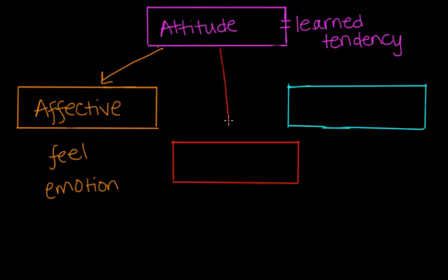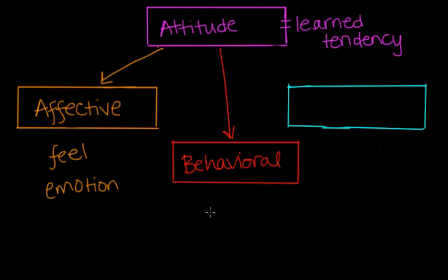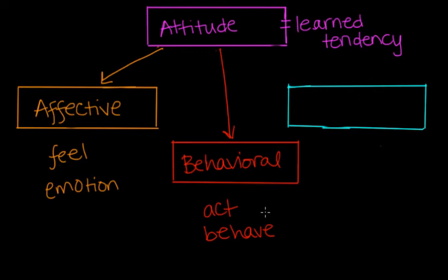The second component is called the behavioral component. The behavioral component is how we act or behave towards an object or a subject. In this component, we may say something like, I will avoid spiders and scream if I see one. The words avoid and scream indicate an action or a behavior, and that's going to influence our attitude.